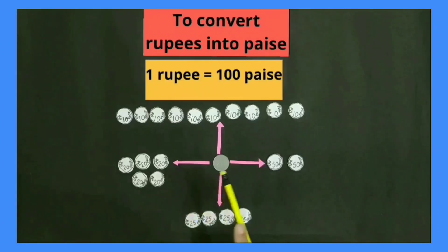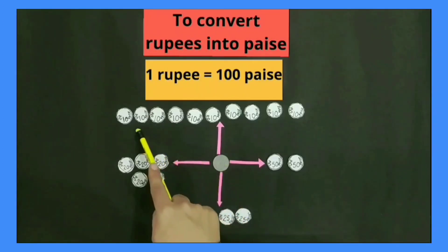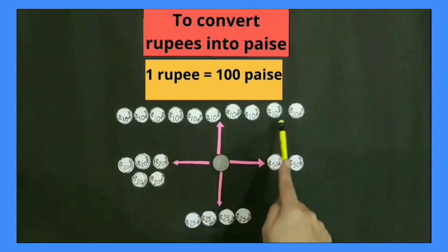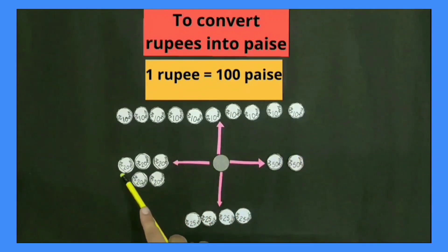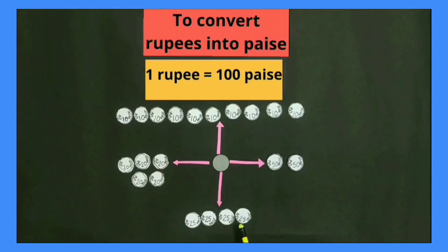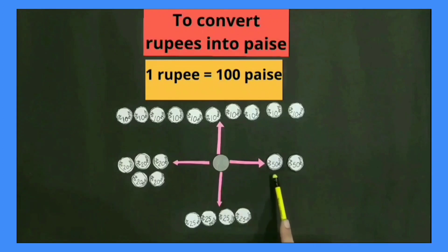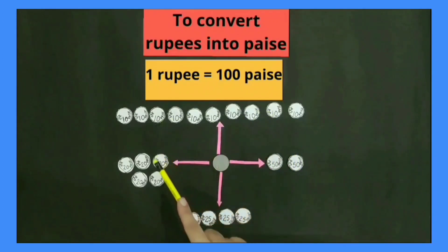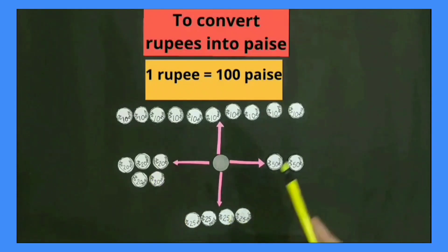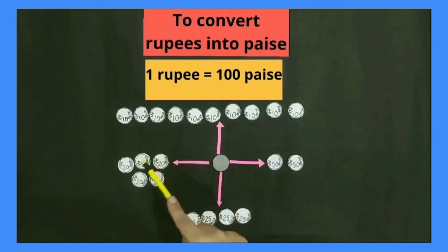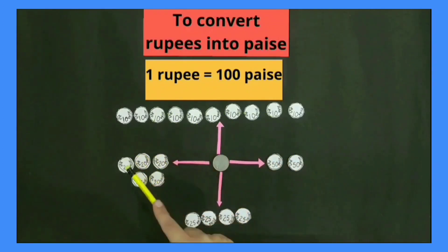There are 10 coins of 10 paise, 5 coins of 20 paise, 4 coins of 25 paise, and 2 coins of 50 paise in one rupee. Now, 10 paise coins, 20 paise coins, and 25 paise coins are no longer in use because these coins are banned by the Indian government.